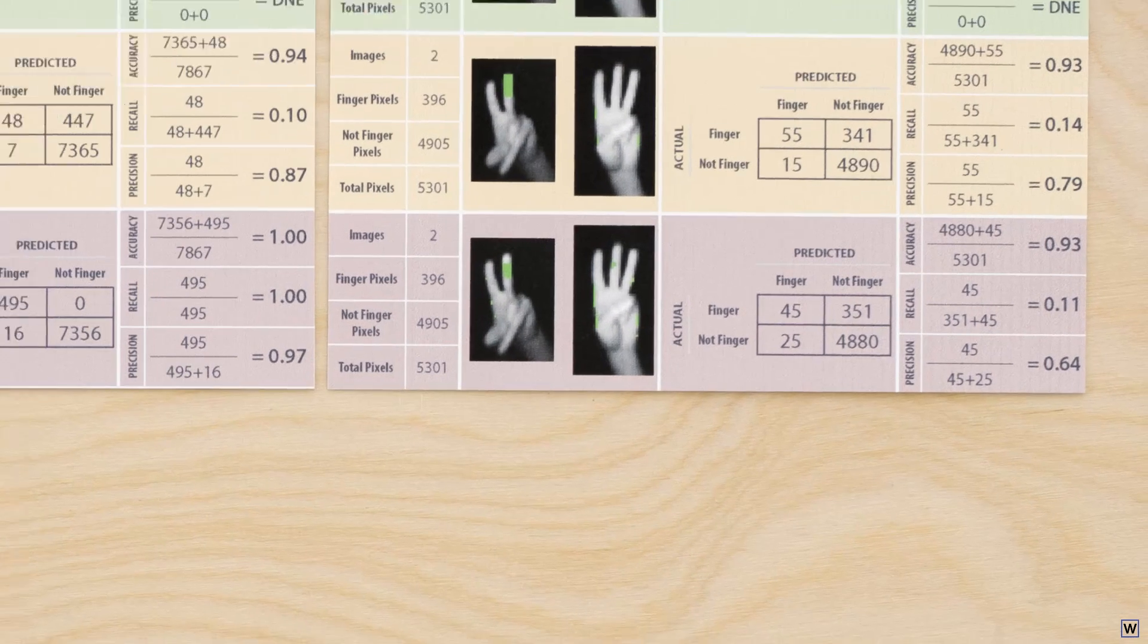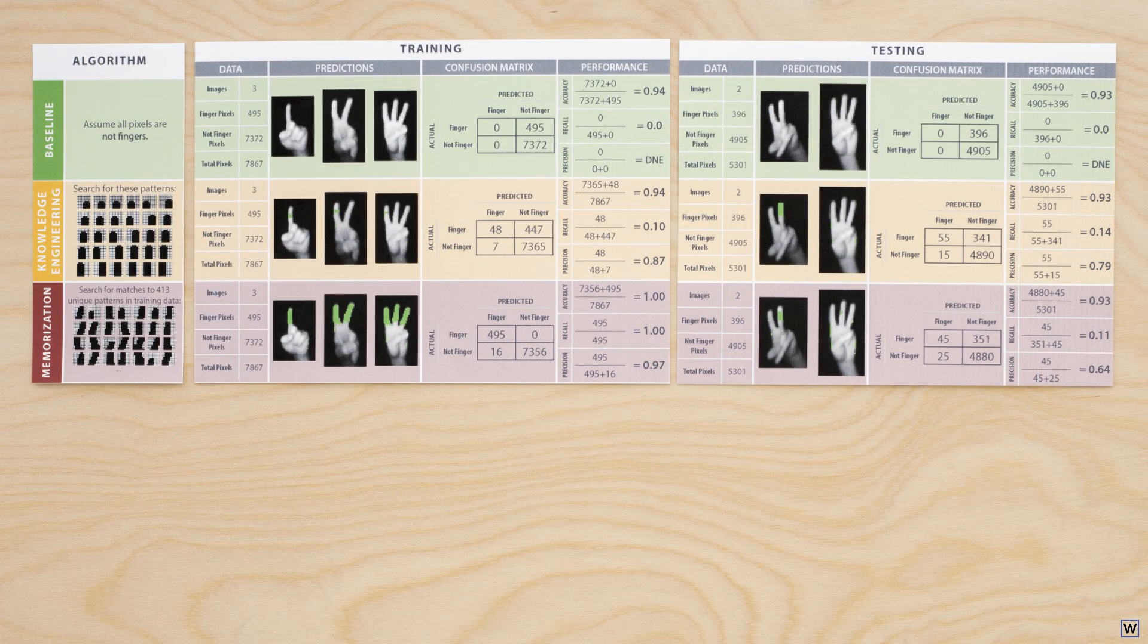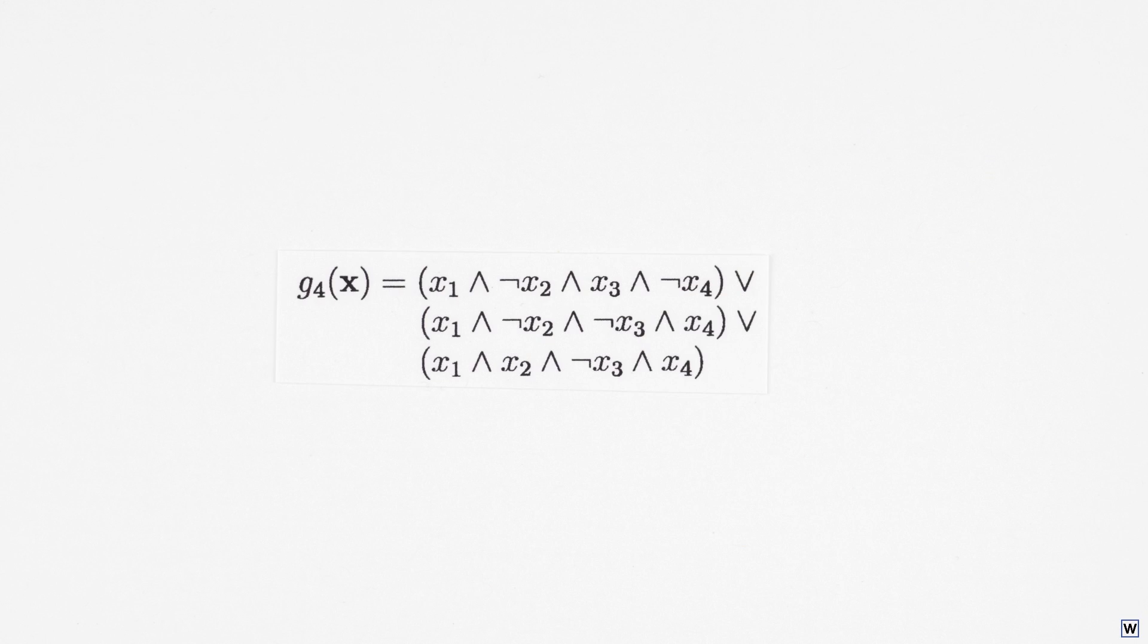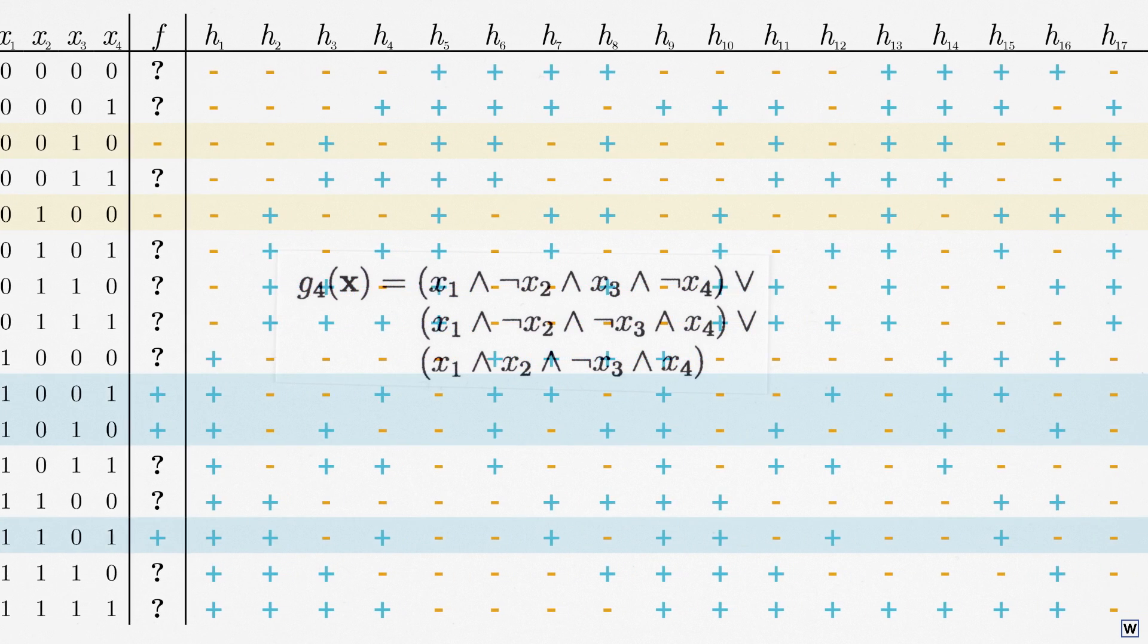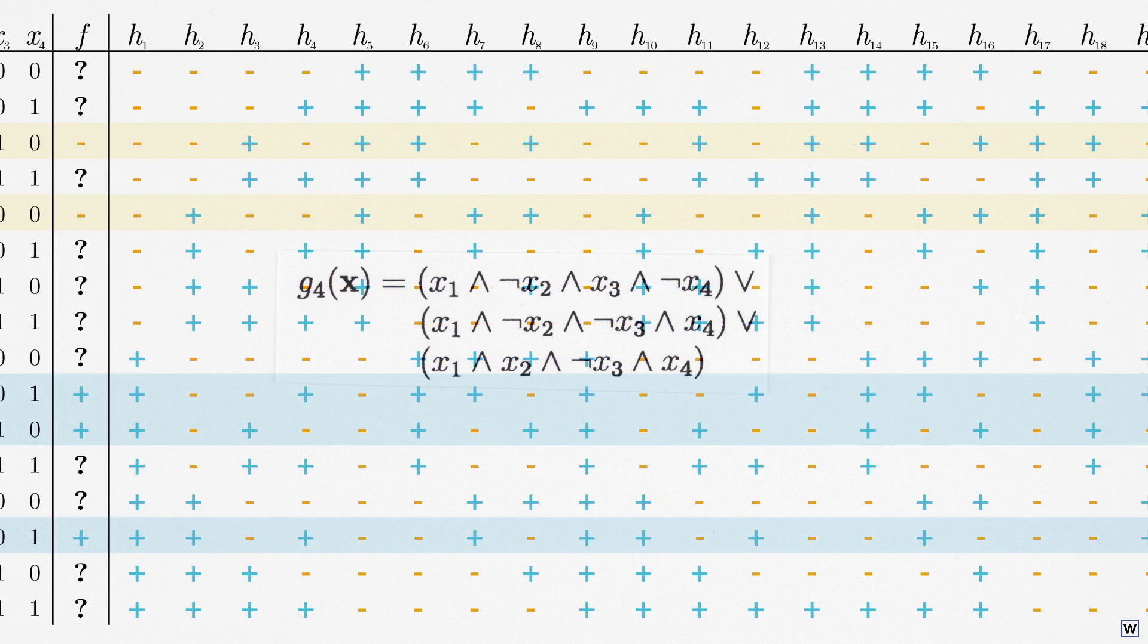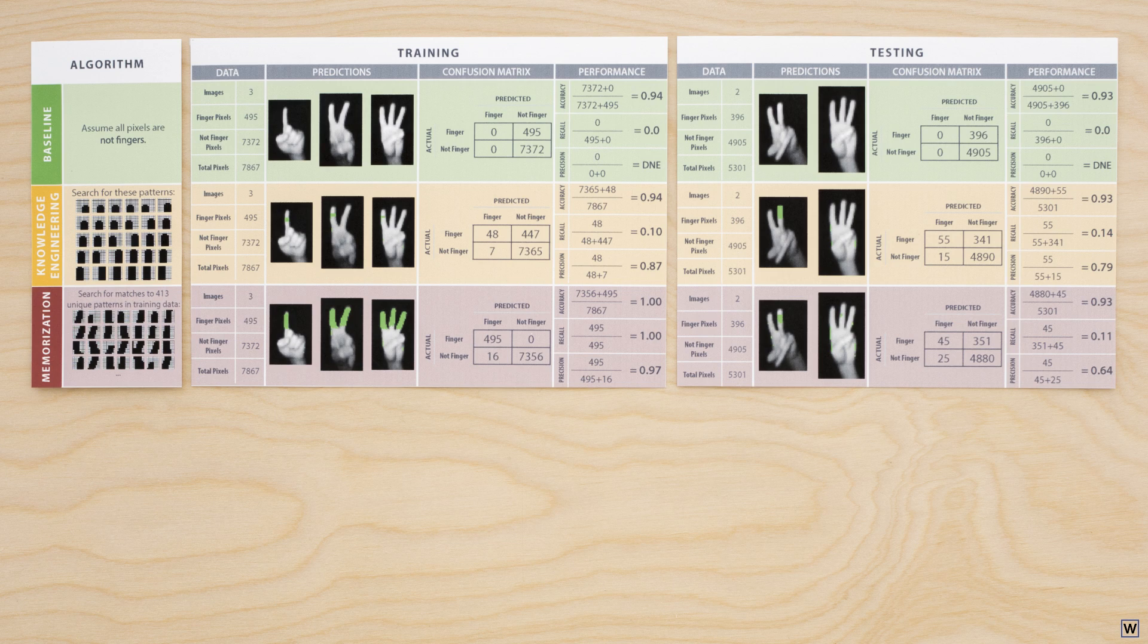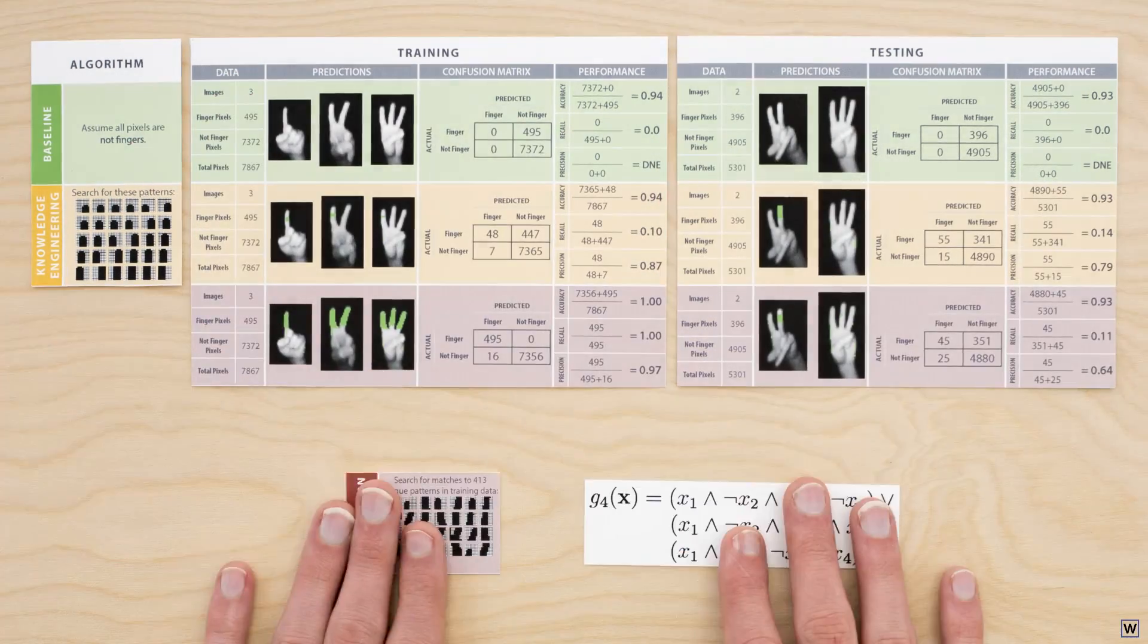We know that our memorization approach failed to generalize, and we now have a new tool to help us understand why. Last time, we considered a rule G4 that was chosen from an enormous class of rules that covered all possible 2 to the 16th, or 65,536, truth table combinations. Since this class of rules covers any possible data set we could ever see, it actually works in the same way as our memorization approach.